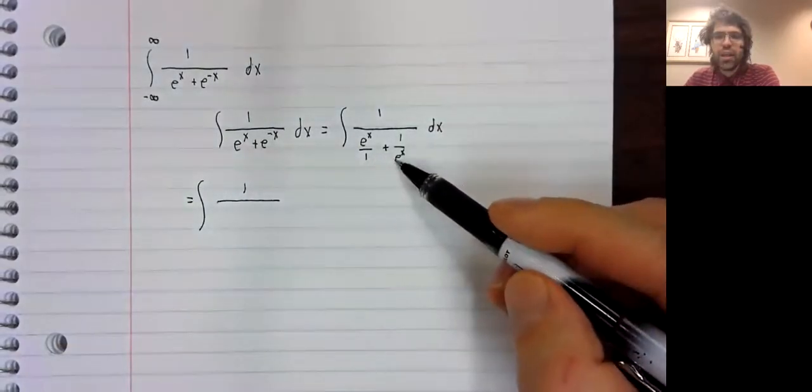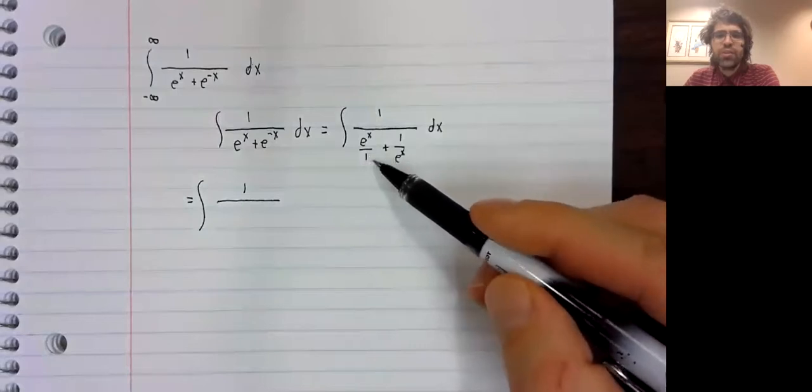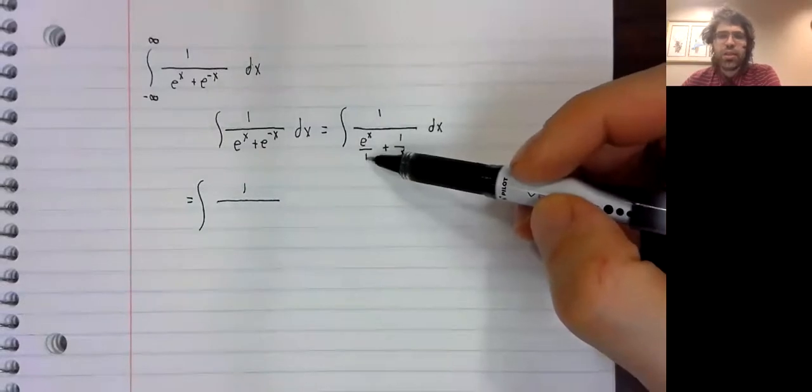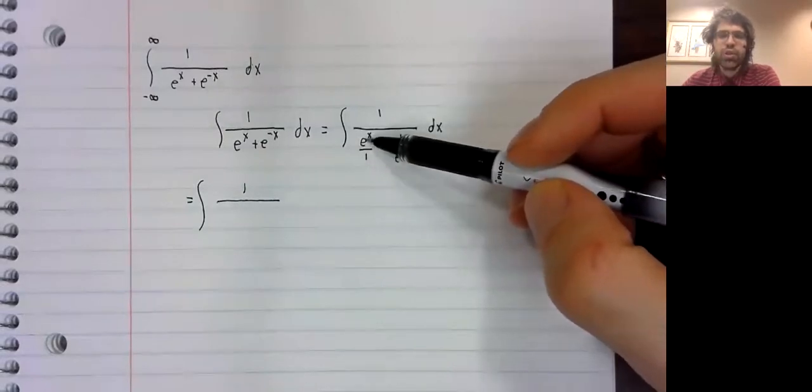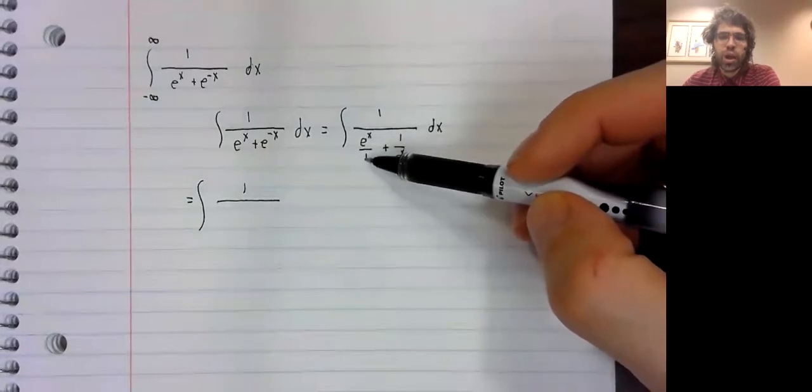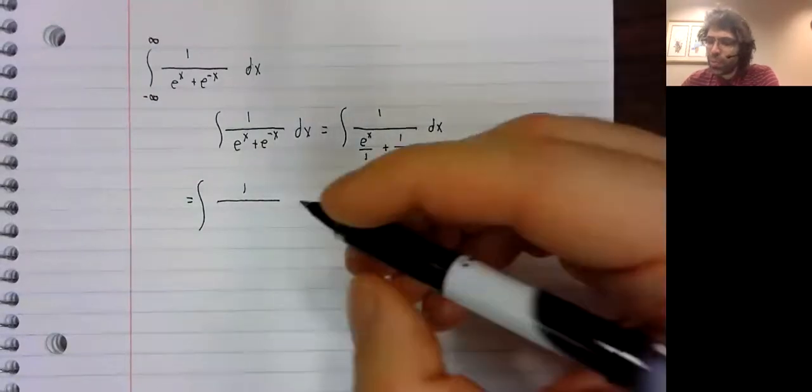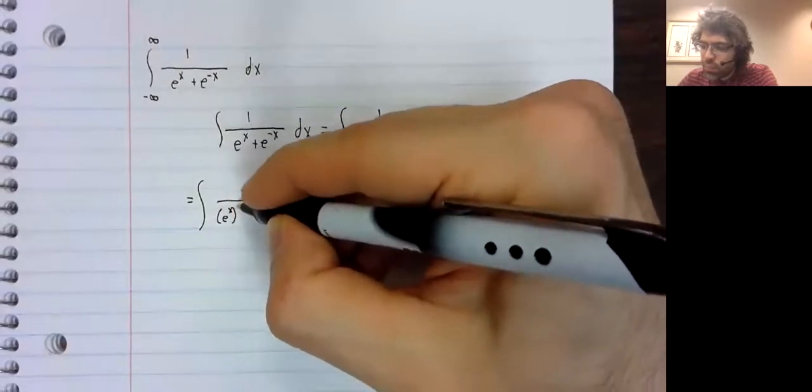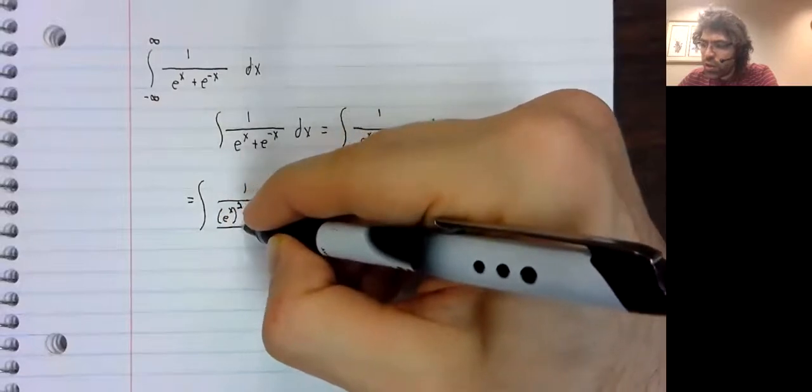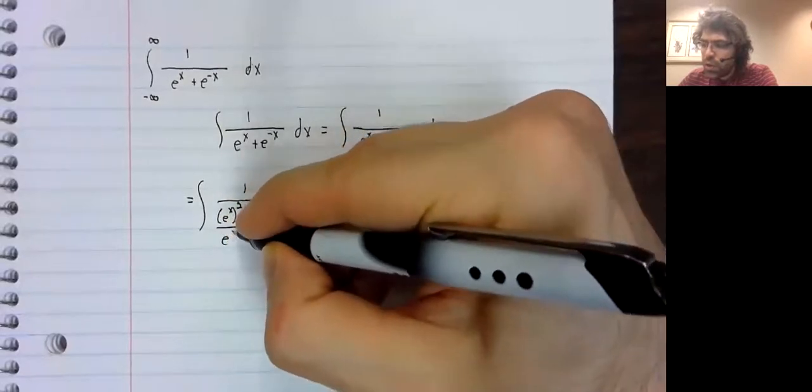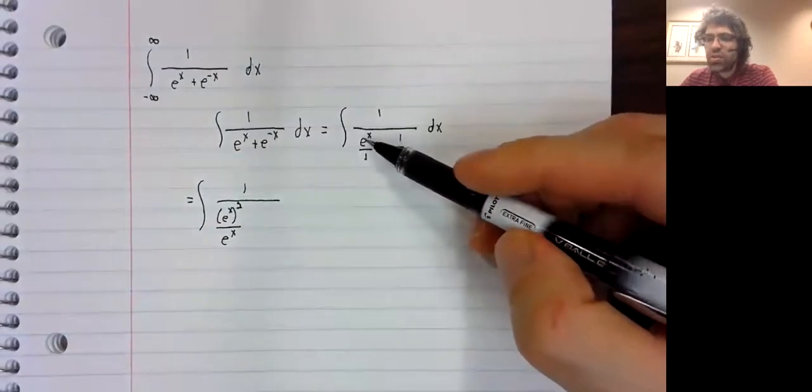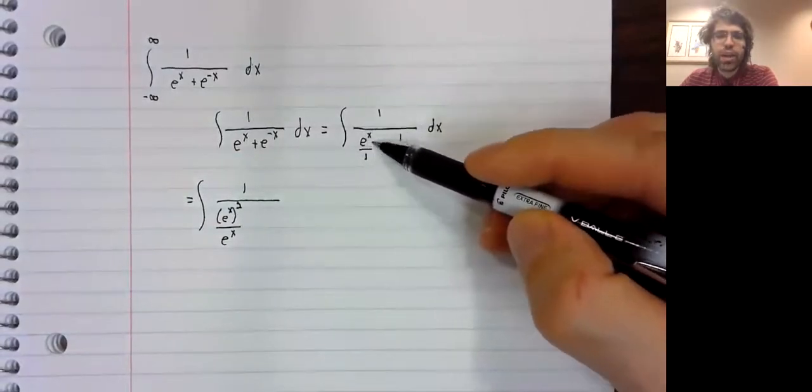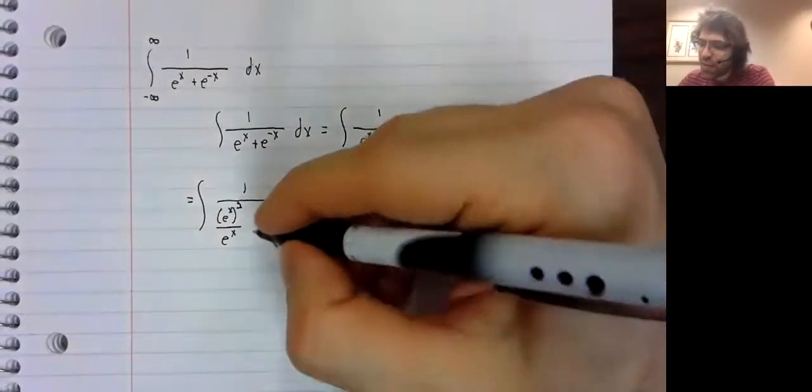The common denominator is e to the power of x. When we get that common denominator here, we'll multiply numerator and denominator by the exponential. So our numerator becomes this square when we multiply what we already have by e to the x.